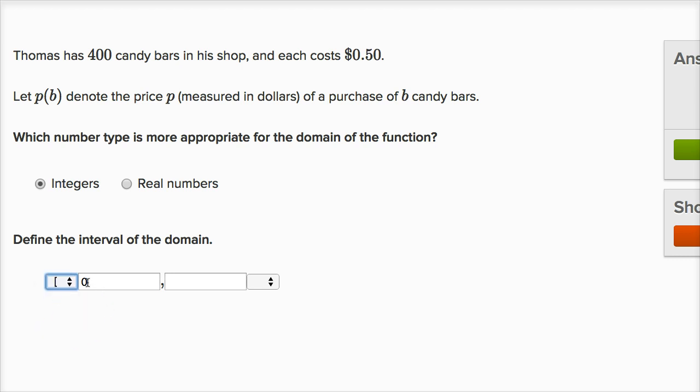So the least I could buy is zero, and then the most I could buy, the store has 400 candy bars, so that's the most I can buy. The most I could buy are 400 candy bars, and I can buy 400, so I would put brackets there as well.